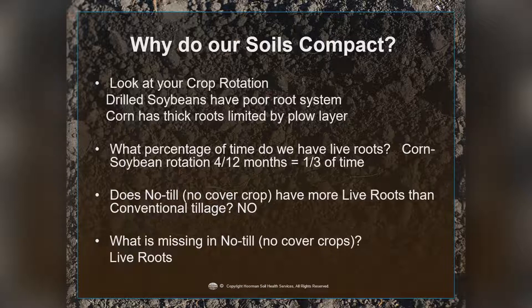Why do our soils compact? Looking at crop rotation: any time we put corn into the rotation, we get more organic matter than with soybeans. Soybeans are thinly rooted and don't add much pore space. Drilled soybeans with a poor root system followed by corn — which has much thicker roots — is often limited by plow layers. It's a bit like pre-drilling a hole in hardwood: cover crops start with a small bit to pre-drill the hole, and then when the corn root follows, it can get through those compacted layers and deeper into the soil.